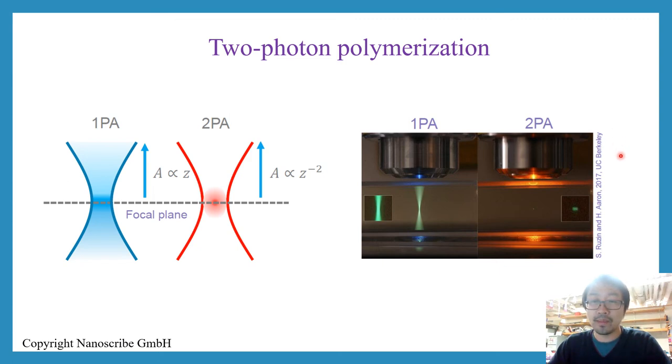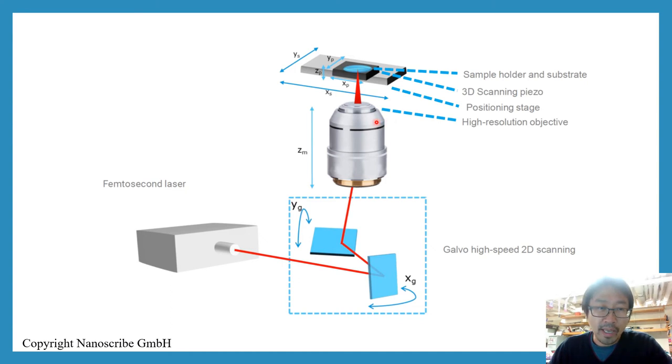This slide here gives you a more detailed overview of the fancy 3D printer that we actually use to produce the micro houses you saw in the previous slide. We use a femtosecond laser and this laser will be scanned by a so-called galvanometer, which is essentially just two mirrors. One can be rotated around the x-axis, the other one around the y-axis.